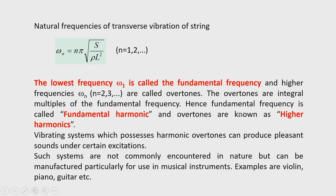The fundamental frequency is called the fundamental harmonic, and overtones are known as higher harmonics. Vibrating systems such as musical instruments that possess harmonic overtones can produce pleasant sounds. Such systems are not commonly encountered in nature but are manufactured for use in musical instruments — examples include violin, piano, and guitar.